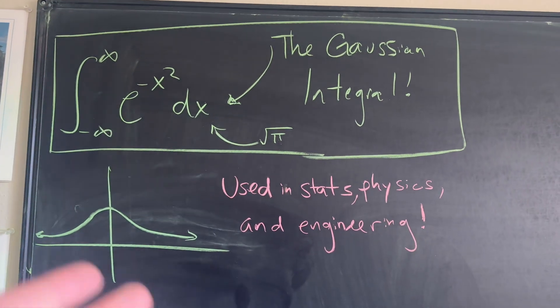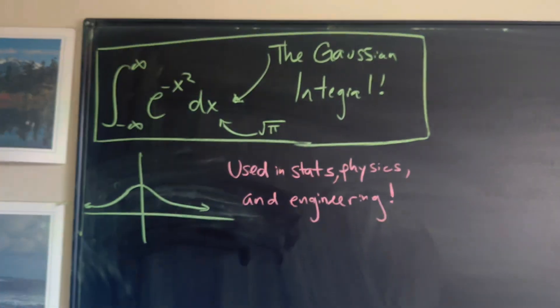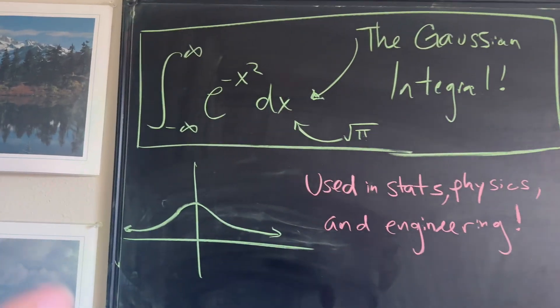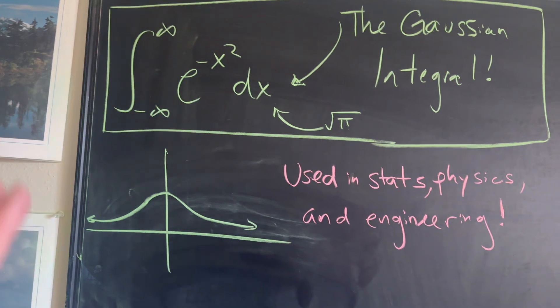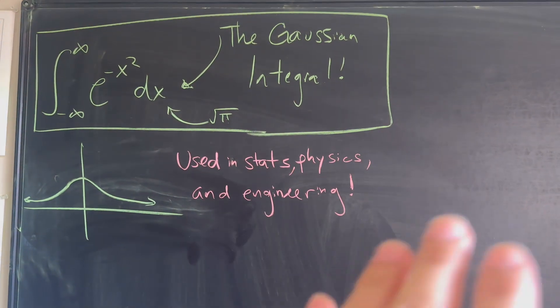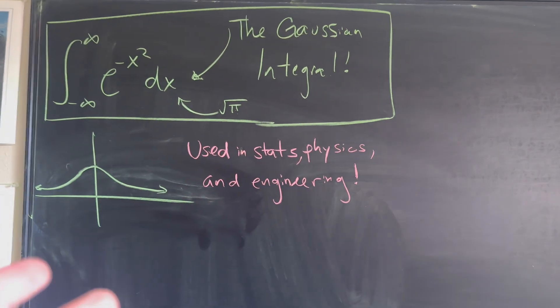In this video, we're going to review something called the Gaussian integral. This is a very special integral that is heavily used in stats, physics, and engineering courses. A lot of people already know that this is going to be equal to the square root of pi, but where does it actually come from? That's exactly what we're going to review today.